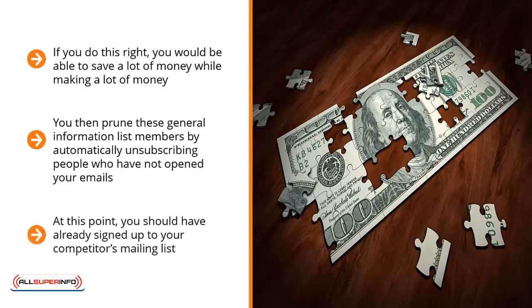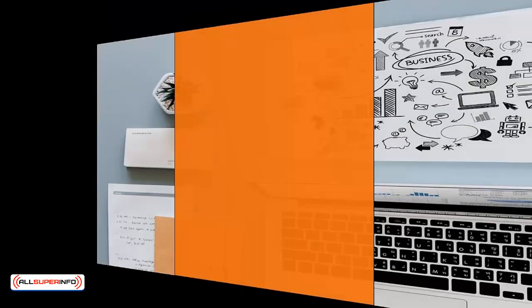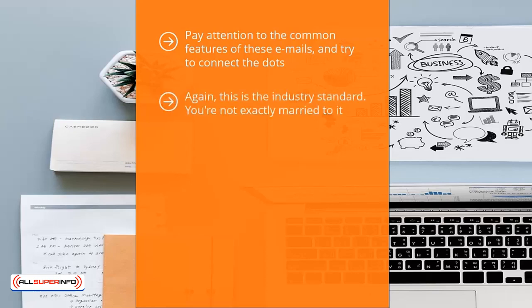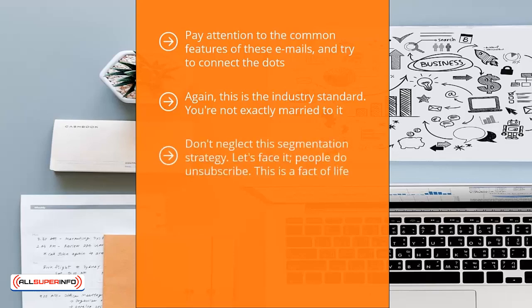At this point, you should have already signed up to your competitor's mailing list. You should already know the topics they send updates on and be very familiar with the content of their updates. Pay attention to the common features of these emails and try to connect the dots — how do they segment their list members, and which of the general strategies are they using? Once you are clear on their segmentation strategy, you might want to start there. This is the industry standard; you're not exactly married to it. You can change it up later and make improvements based on how your list behaves.